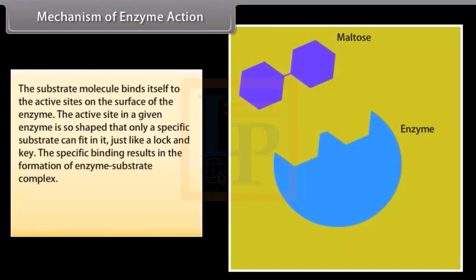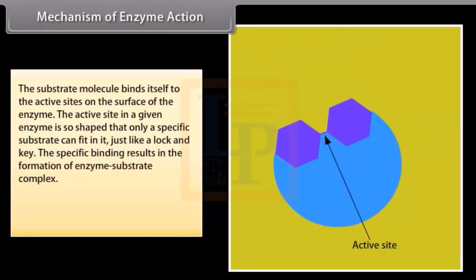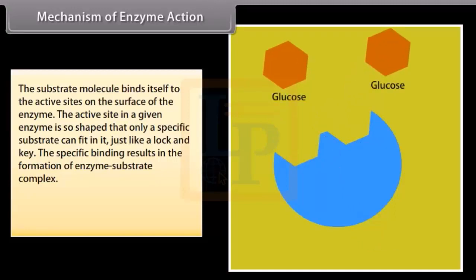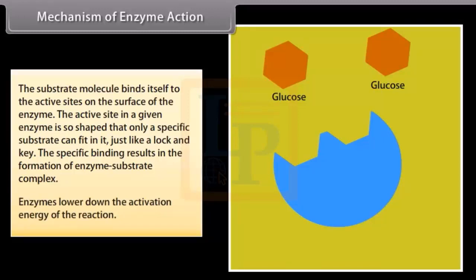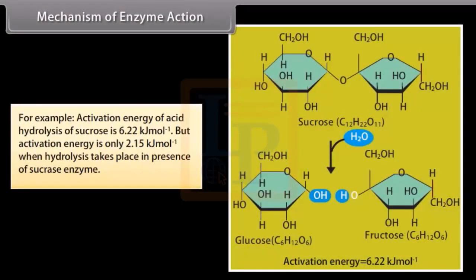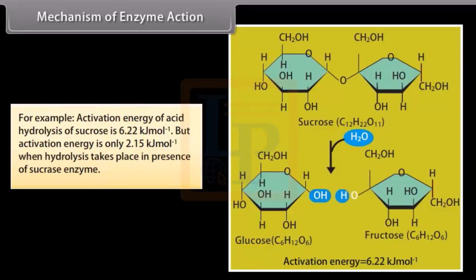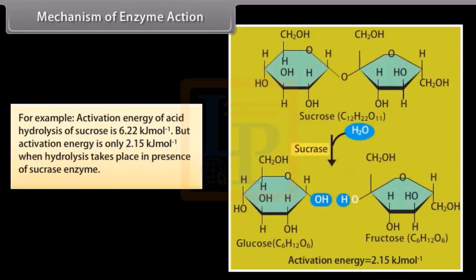In the mechanism of enzyme action, the substrate molecule binds itself to the active site on the surface of the enzyme. The active site in a given enzyme is so shaped that only a specific substrate can fit in it, just like a lock and key. This specific binding results in the formation of an enzyme–substrate complex. Enzymes lower the activation energy of the reaction. For example, the activation energy of acid hydrolysis of sucrose is 6.22 kJ per mole, but it is only 2.15 kJ per mole when hydrolysis takes place in the presence of sucrase enzyme.